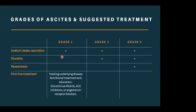In terms of overview of managing ascites, for grade one ascites we only have sodium intake restriction. For patients with grade two ascites, according to EASL guidelines, we recommend sodium restriction and diuretics, and paracentesis for grade three ascites. However, the first-line treatment is treatment of the underlying disease with nutritional support and patient education, and we encourage patients to discontinue other medications like NSAIDs, ACE inhibitors, and angiotensin receptor blockers.